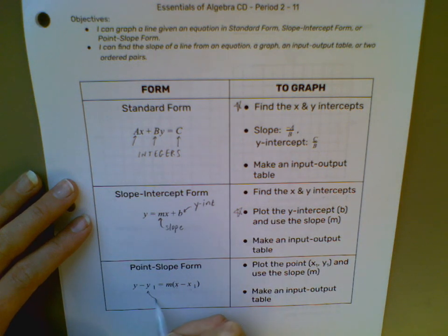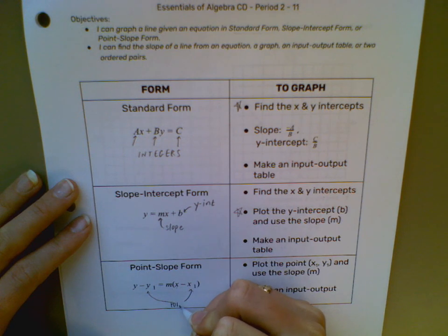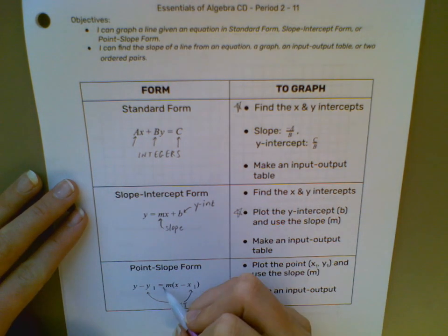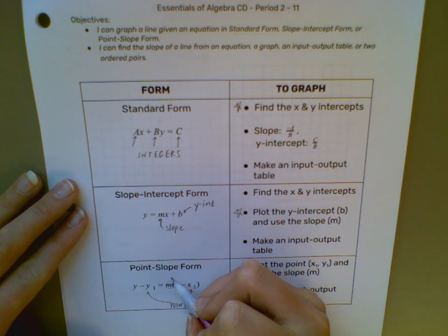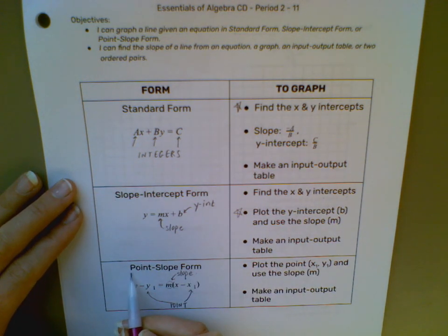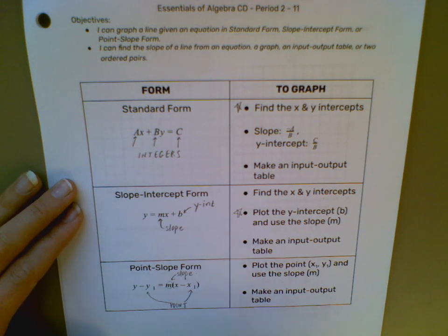So this X1 and Y1 are going to be our point on a line. And then M, just like in slope-intercept form, is our slope. Again, the name tells us what we have in here: a point and the slope.